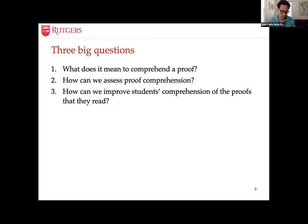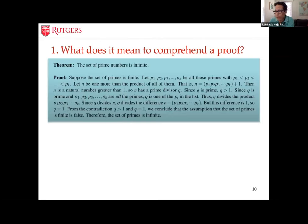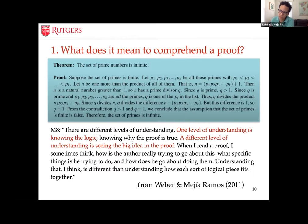The three big questions are: What does it mean to comprehend a proof? How can we assess proof comprehension? And how can we improve students' comprehension of the proofs they read? Regarding the first question, we interviewed mathematicians about what it means to understand a proof. One very useful distinction that emerged was between two levels of understanding: knowing the logic — knowing why the proof is true — and seeing the big idea in the proof.